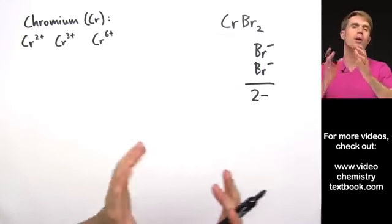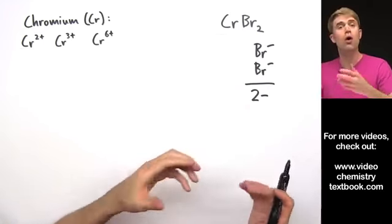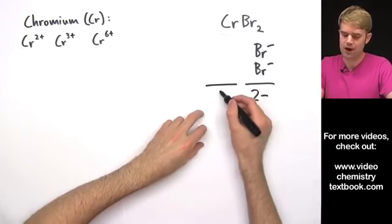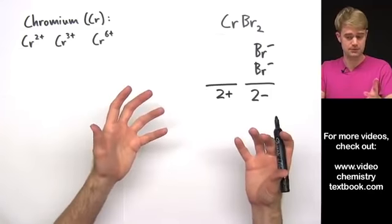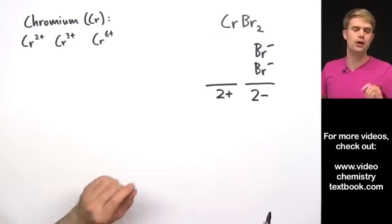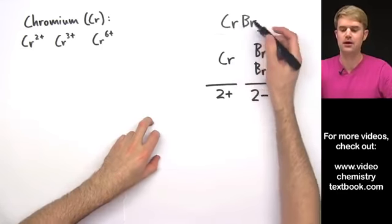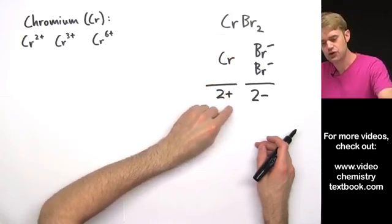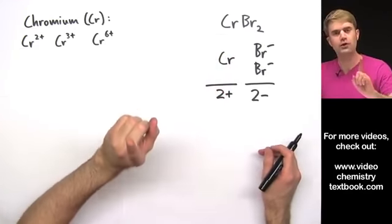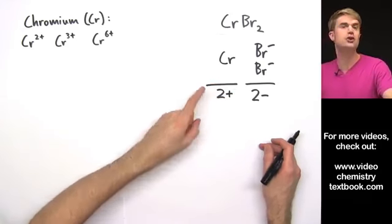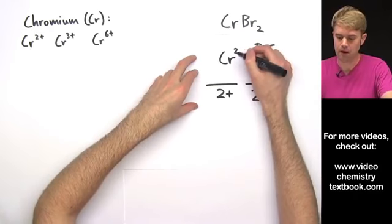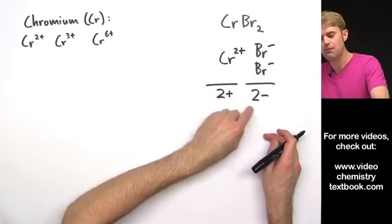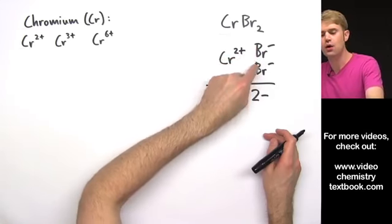In an ionic compound, you always have to have the positive and the negative charge balanced out. So if we have 2- total negative charge, we have to have 2+ of positive charge. Now we can figure out the charge on chromium. We have one chromium in this compound — there's no number after it, which means we just have one. Chromium is our positive ion, and we have 2+ of positive charge, so that one chromium ion has to hold all of it. The charge on chromium is 2+.